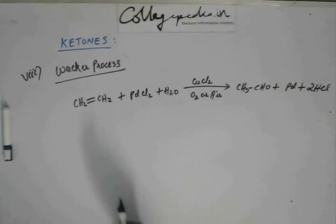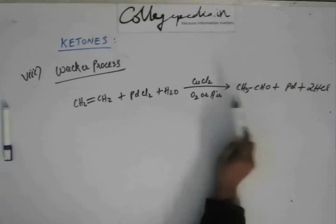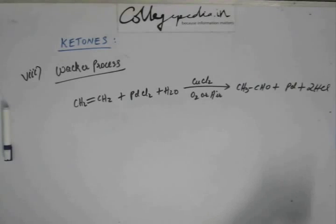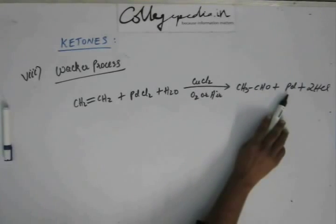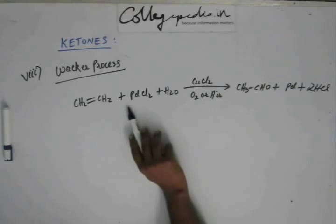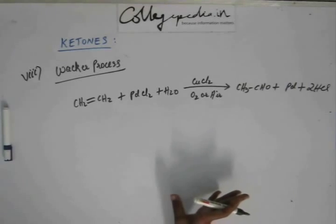Basically what has happened here is this ethene has undergone oxidation because of this addition of oxygen, and this palladium has undergone reduction from +2 state to 0 state. The oxidation state here is 0, here it's +2. So this is basically a redox reaction. Alkene is getting oxidized, palladium is getting reduced.